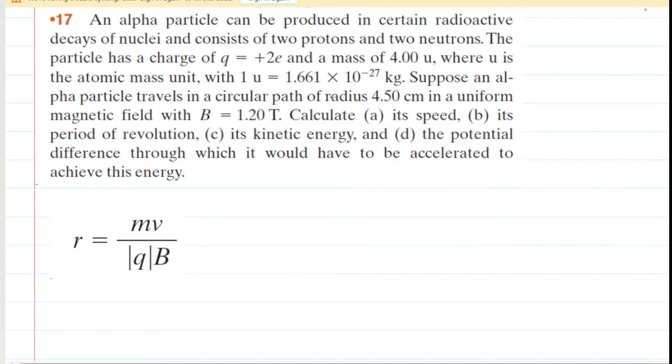In this question, we have an alpha particle that is traveling in a circular path of radius four and a half centimeters in a uniform magnetic field, and they gave us the magnitude of that magnetic field. In part A, we need to calculate the speed of the alpha particle.